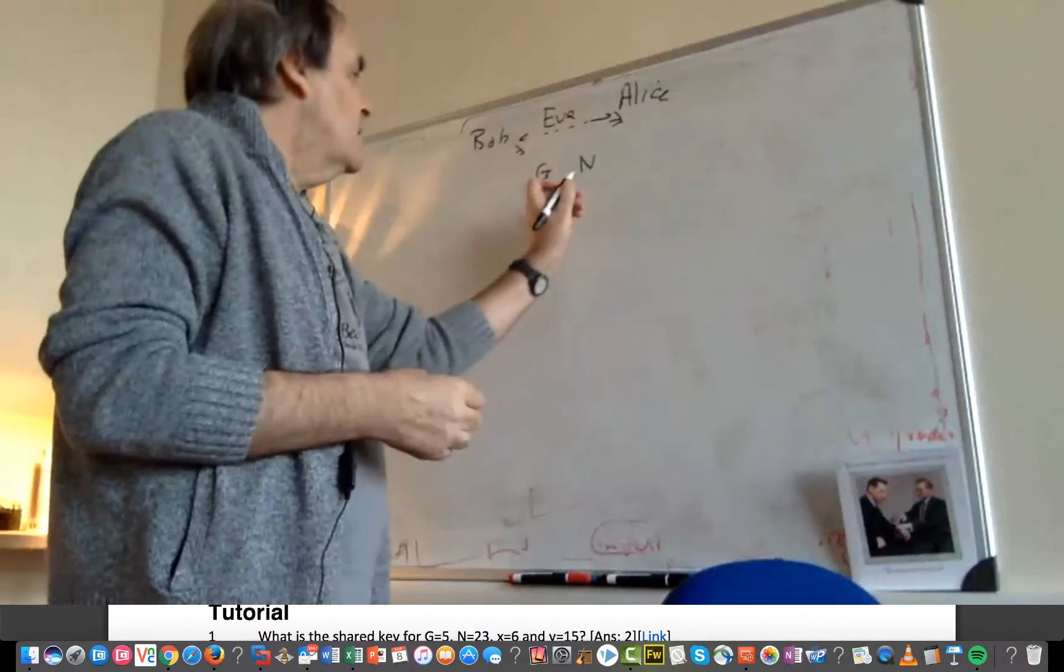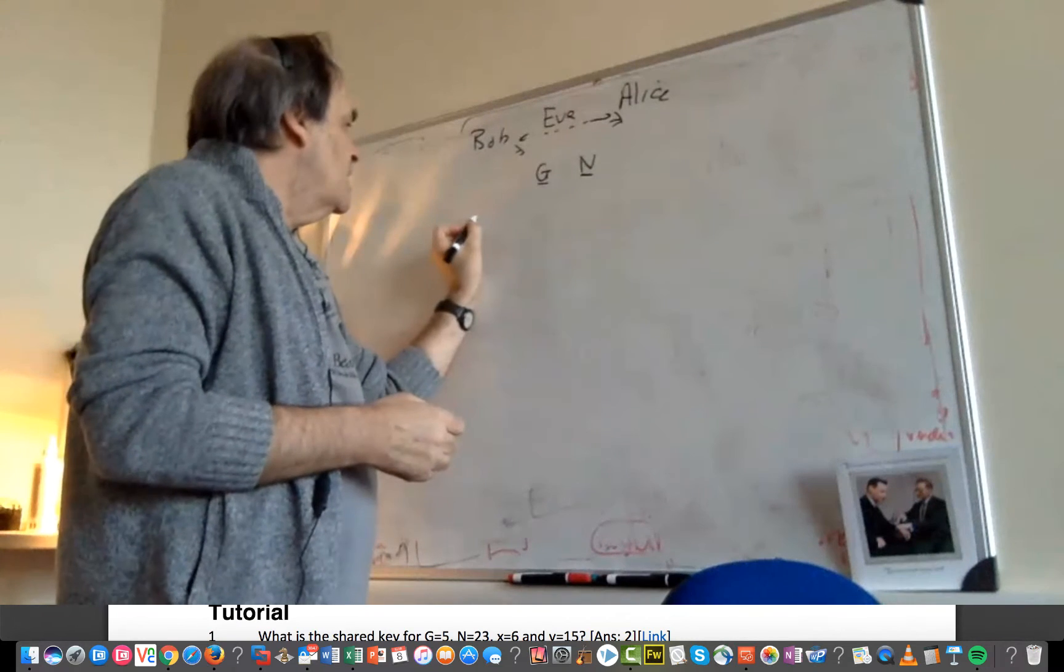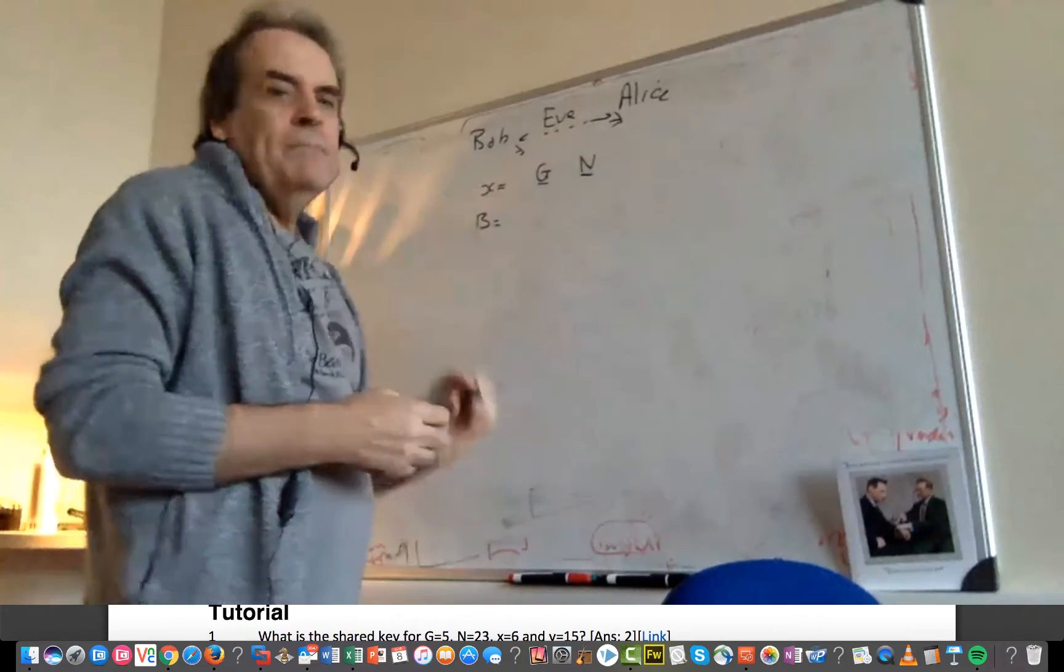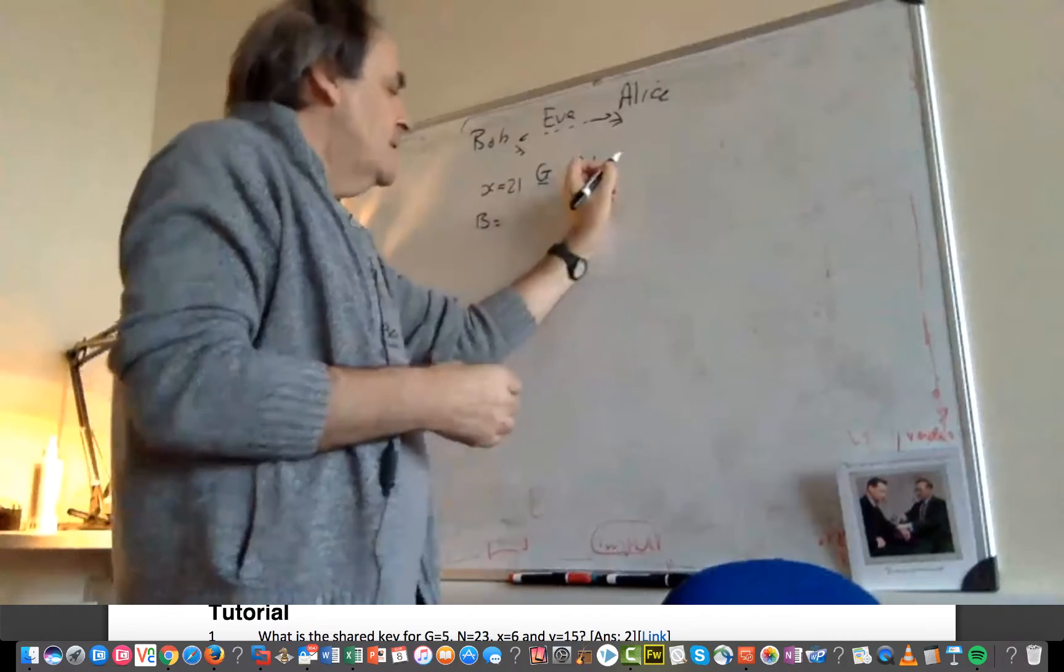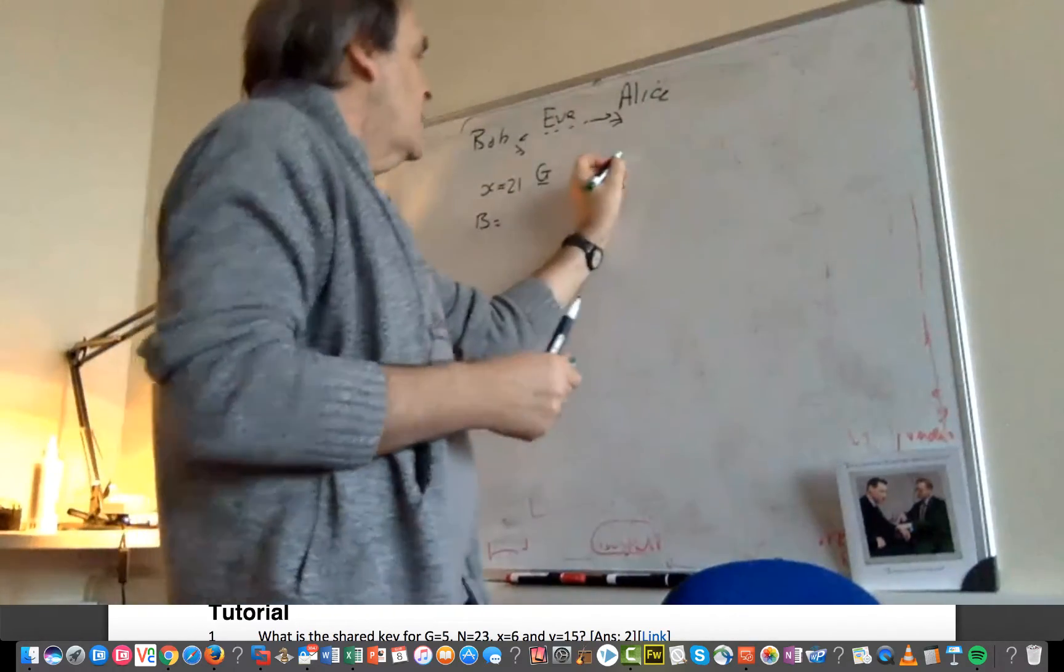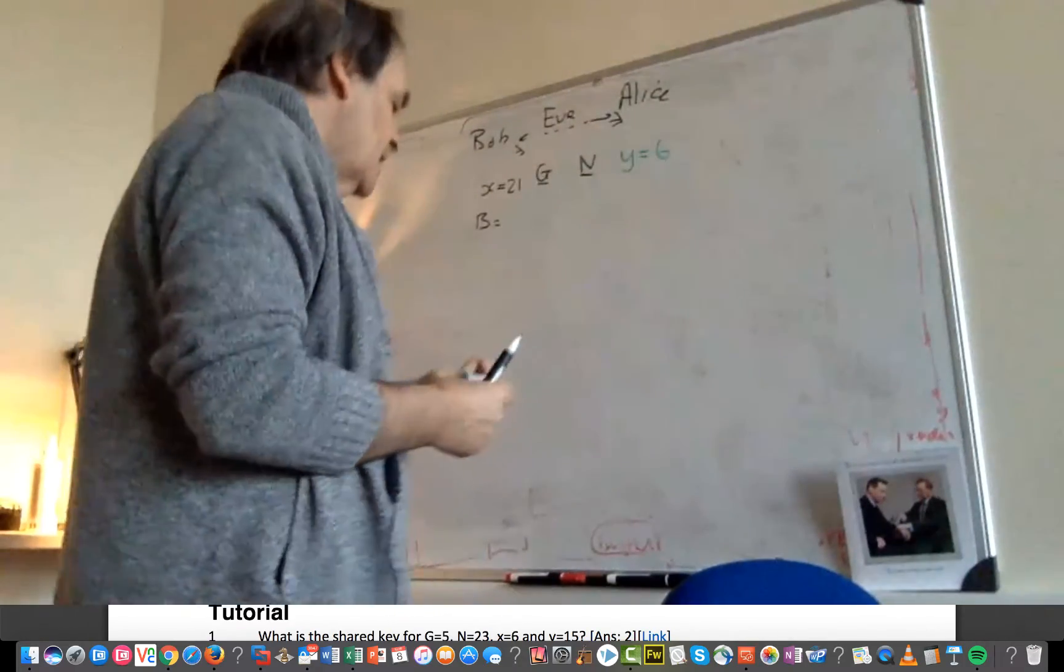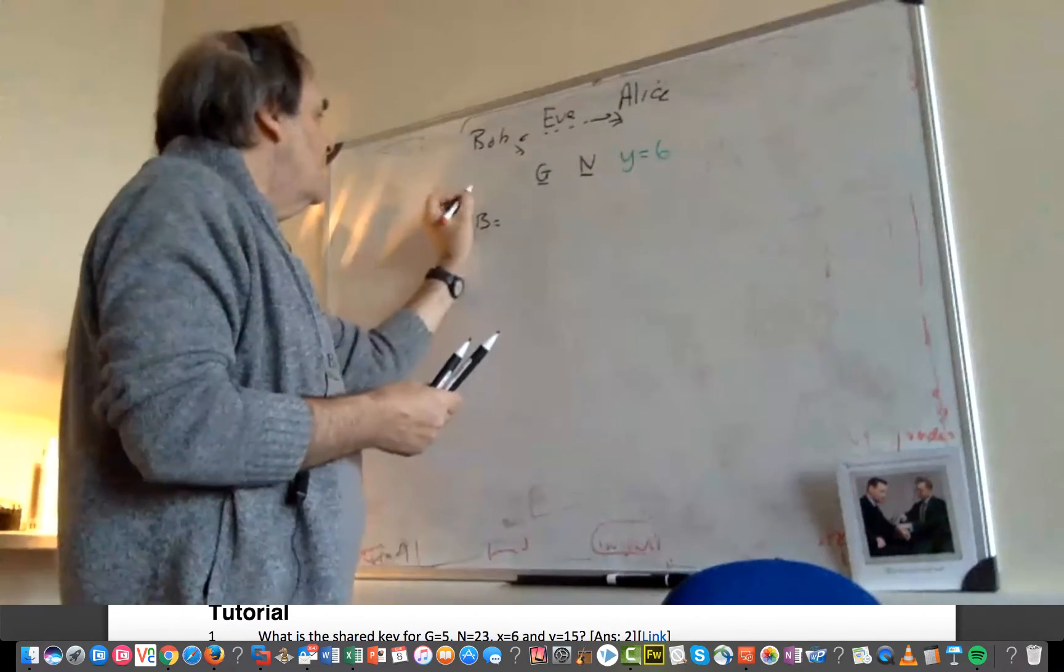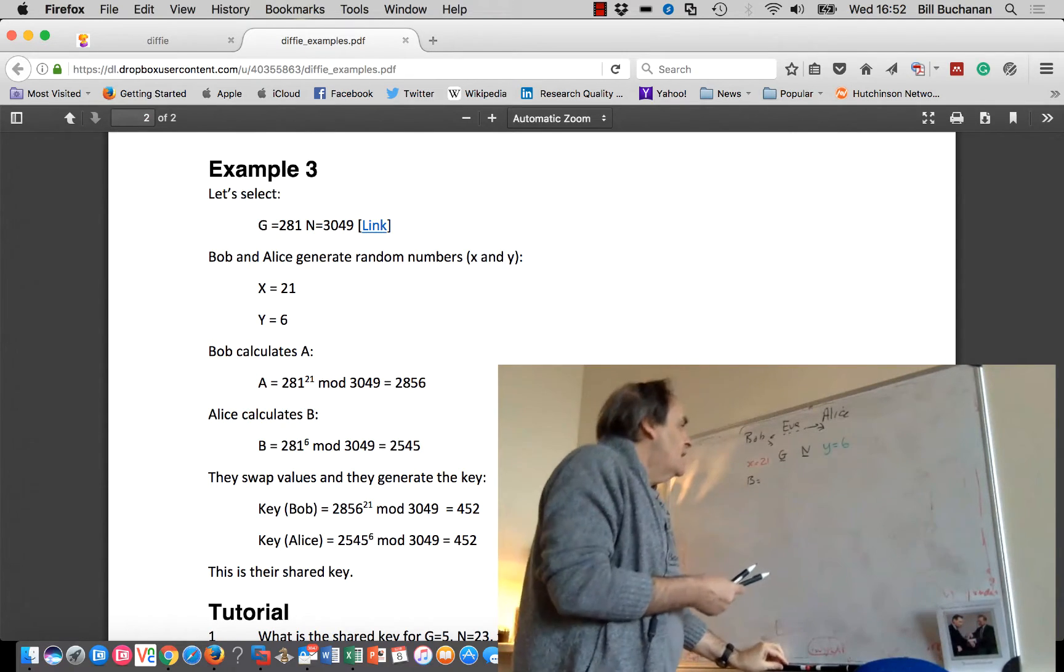So Bob initially selects a random number, so in this case we'll select 21, and then Alice will select her random number, and in this case we'll select 6. So Bob has 21 for his random number and Alice has 6.